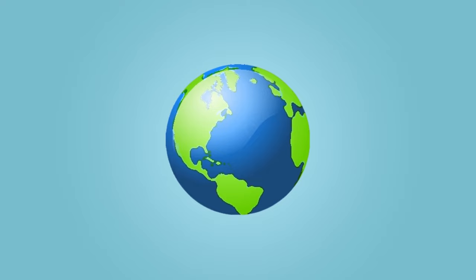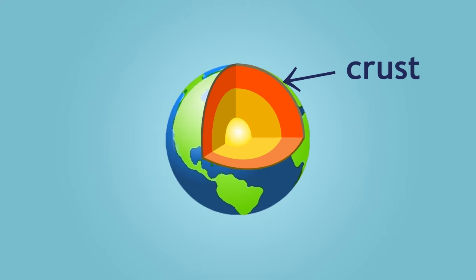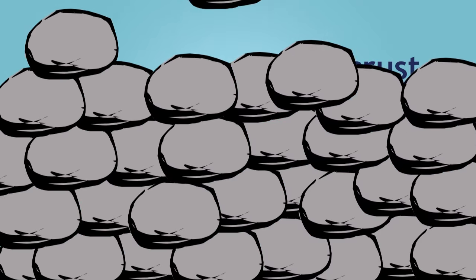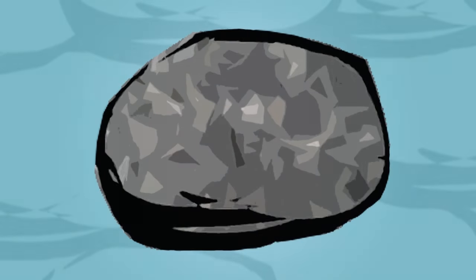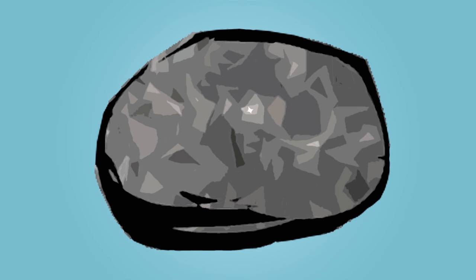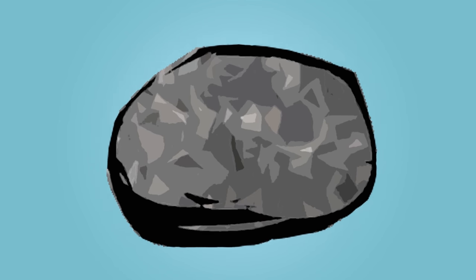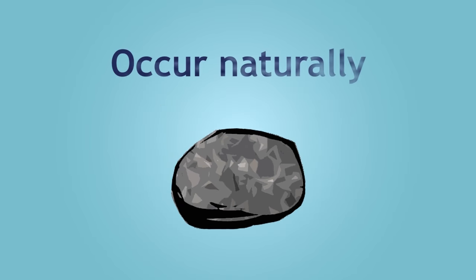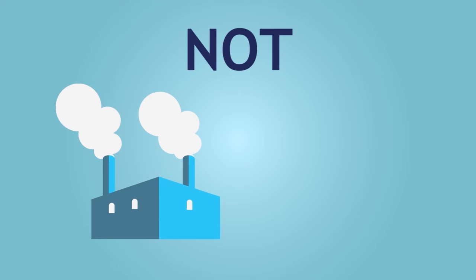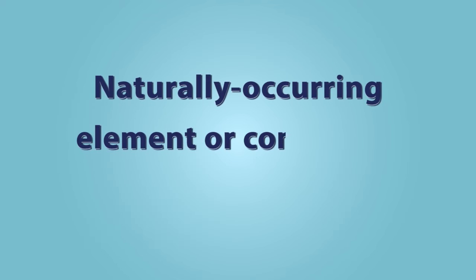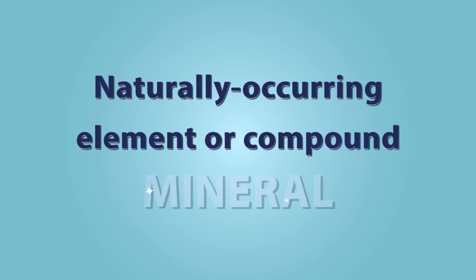As you may already know, the Earth's crust is made of rocks. If you look closely at a rock, you will see that there are many different bits. Some bits are dull, whereas other bits are rather shiny. The main idea here is that all these components occur naturally — they are not made in a factory or by a human being. A naturally occurring element or compound is known as a mineral.